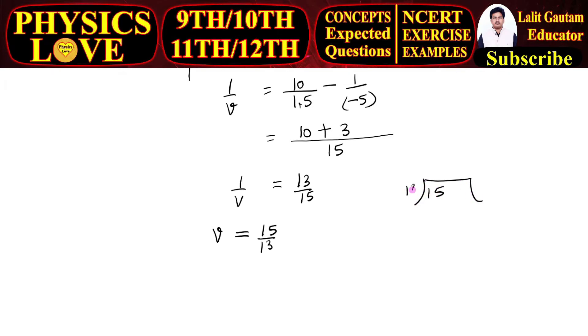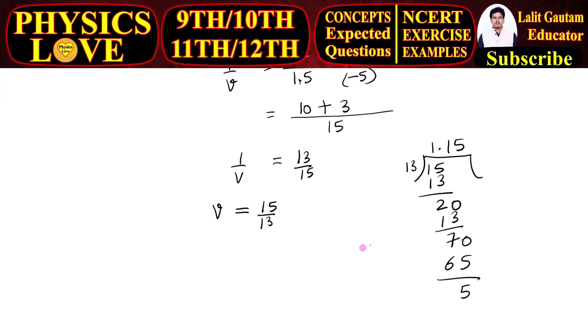15 divided by 13. 13 once is 13, now it is 2 point, it will be 0 again. 13 once is 13, it is 7. Now again I am writing here 0. 13 times 5 is 65, now again it will be 5, then 13 times 4 is 52.